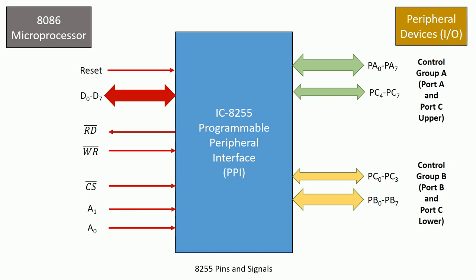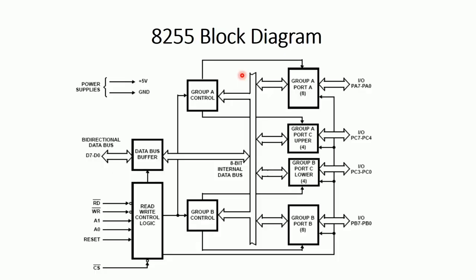Now let us discuss the block diagram for IC8255 — this is for representation purposes only, you need not remember it. We can see Control Group A and Control Group B. Control Group A has two lines: one going to Port A and the other to Port C upper. Control Group B controls Port C lower and Port B. Port B and Port A are each 8 bits (PB0 to PB7), and Port C is divided into upper (PC4 to PC7) and lower (PC0 to PC3), each four bits.